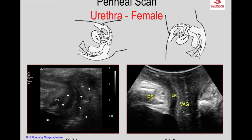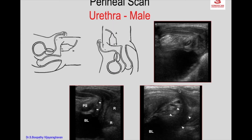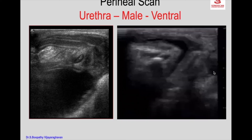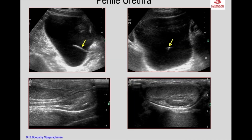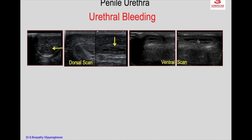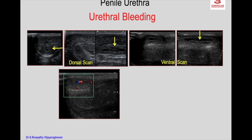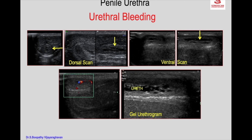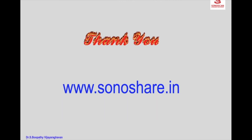The mucus in the vagina gives it an echogenic appearance with an echopoor wall in a child. Here you see the bladder and the structures: the pubic symphysis, bladder, rectum, and urethra. It was a thin leaf of a plant which had been introduced, causing pain. The ventral scan confirmed the same, and on color Doppler showed flow indicating it is a hemangioma, also better seen on gel urethrogram. You see the urethra and the hemangioma of the walls — this is a hemangioma of the penile urethra resulting in urethral bleeding. Thank you for your attention.